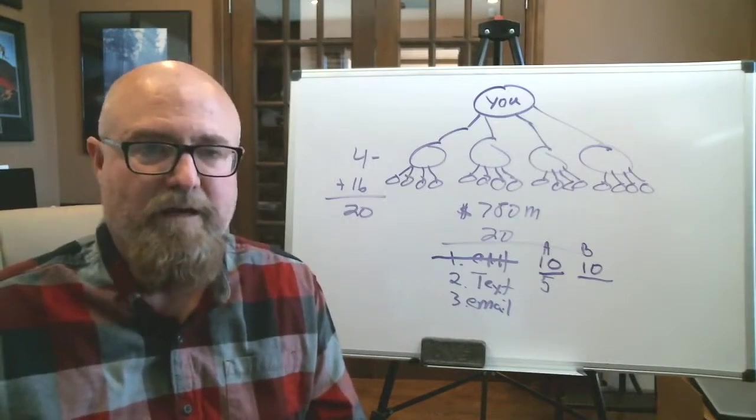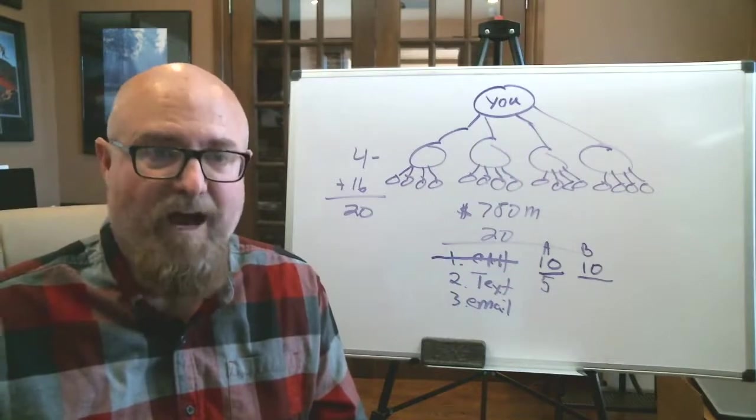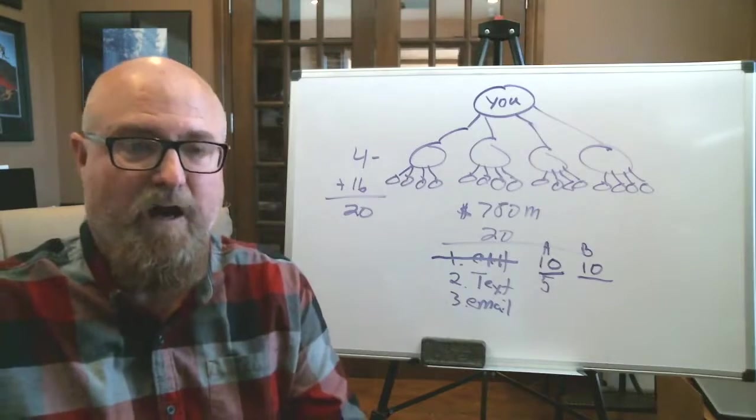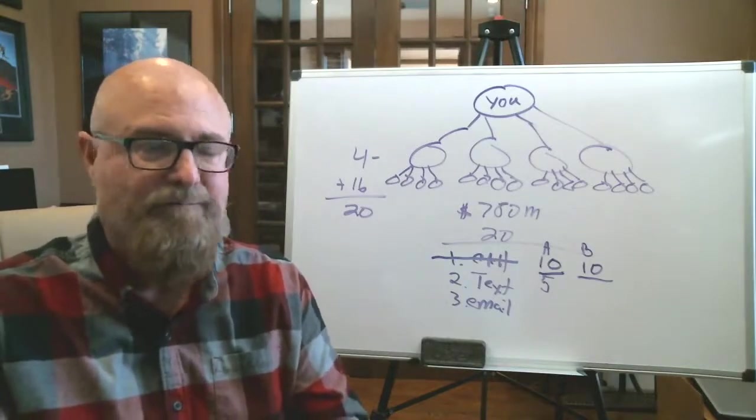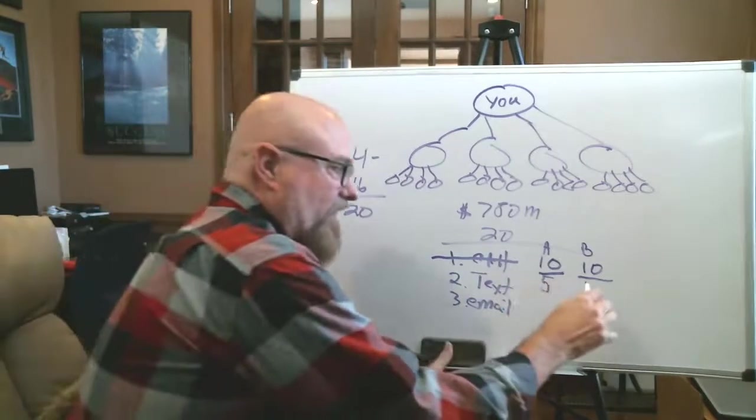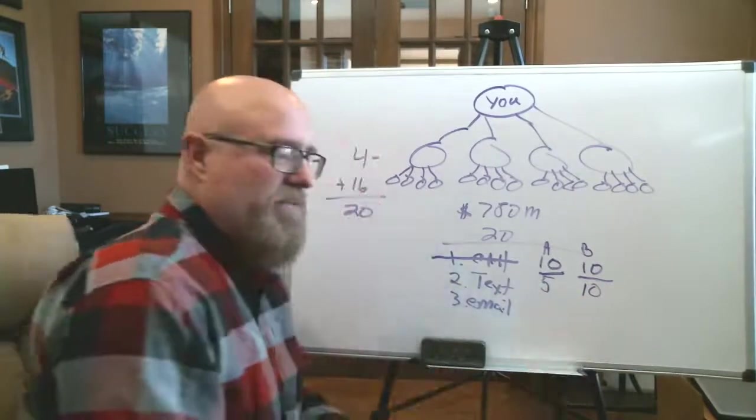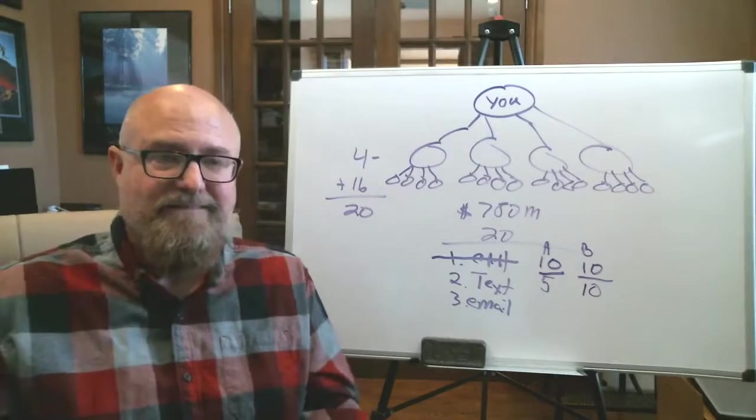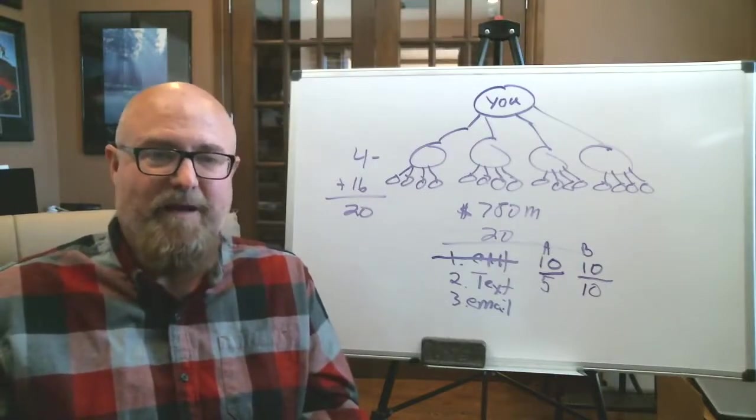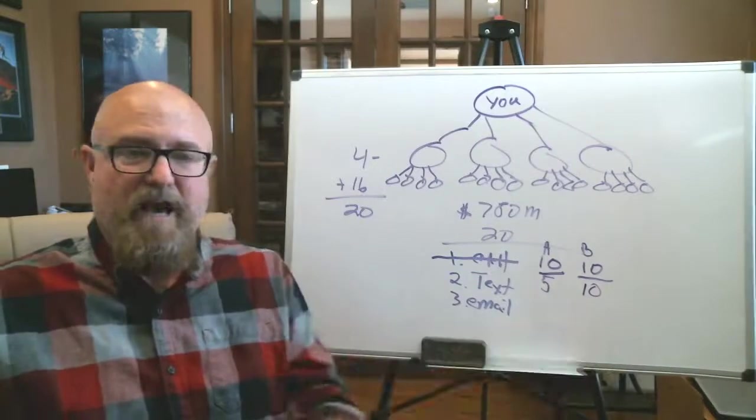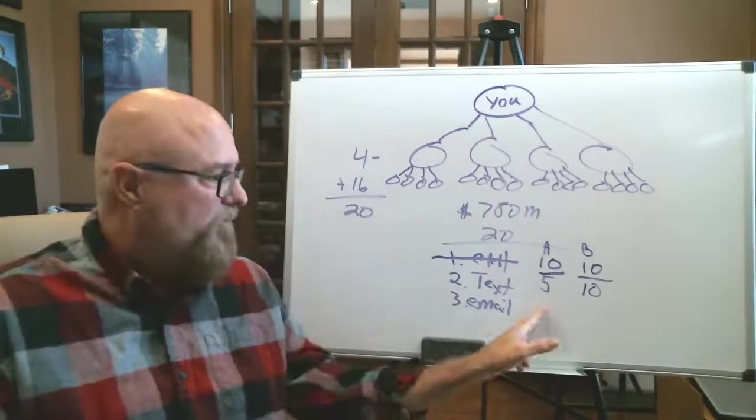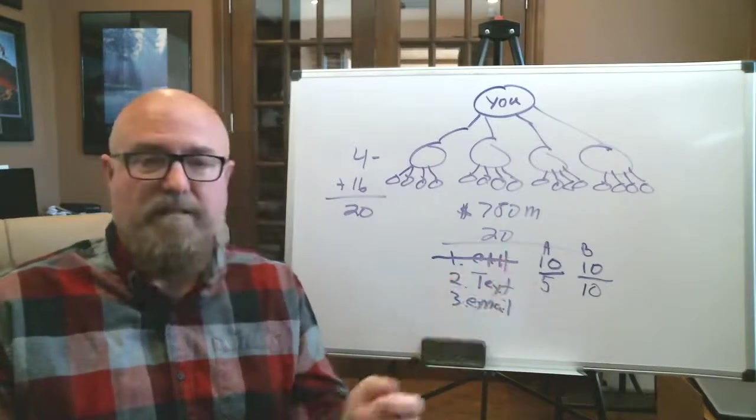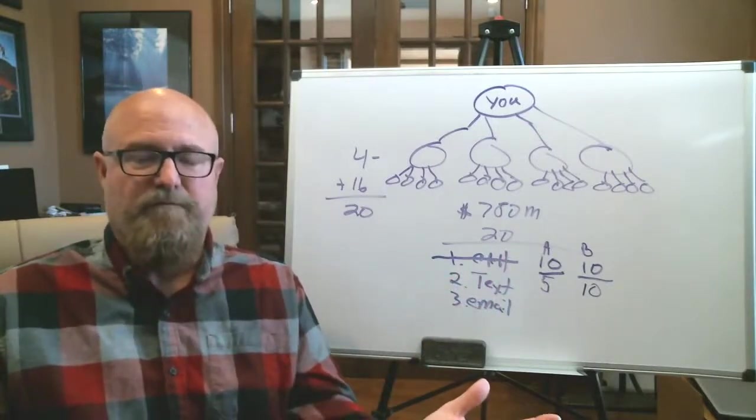When you get involved with our lead program, number one, you've got to open the file. Most people don't open the lead file because they think as soon as I open, I got to call them and I'm not ready to call them yet. So out of here, we had all 10 people text and email. There's no fear in texting. There's no fear in emailing, right? Category B signed up twice as many people as the people in category A did. We all did it on 100 leads for each one of them. So what is that? It's that 2,000 lead test. Folks, it's about exposure.